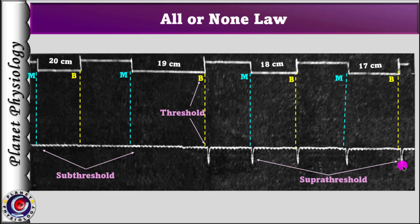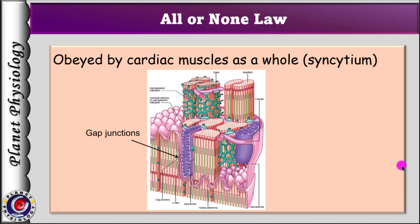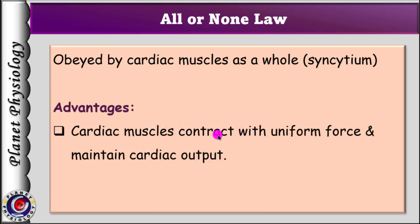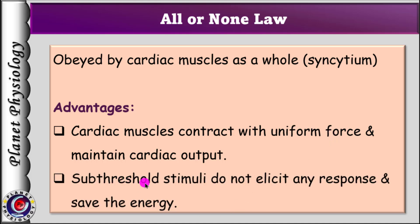Let's discuss the significance of this property. Cardiac muscles possess gap junctions, and hence the All or None Law is obeyed by the cardiac muscles as a whole — by the syncytium, both atrial and ventricular syncytium. This ensures that for every adequate stimulus, the cardiac muscle contracts as a single unit with uniform force, which helps to maintain adequate stroke volume and hence cardiac output. At the same time, weaker or sub-threshold stimuli do not initiate muscle contraction, saving energy. Thus, due to the All or None property, the heart maintains consistent and strong contractions to support the body's needs.